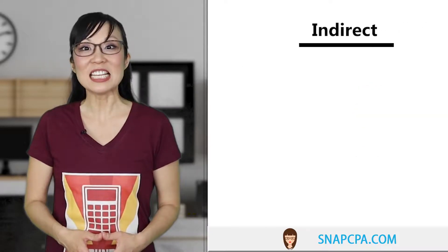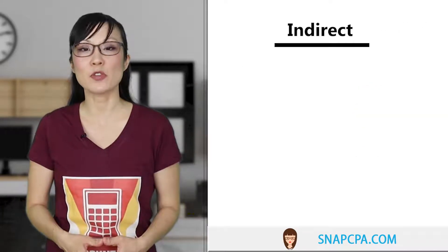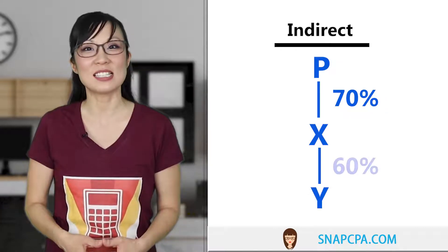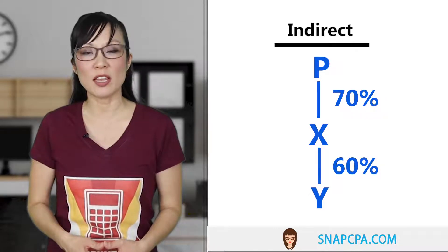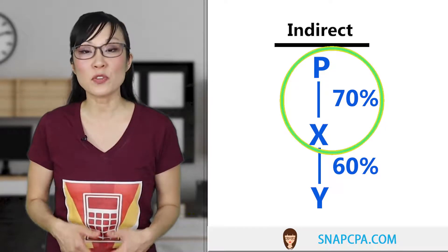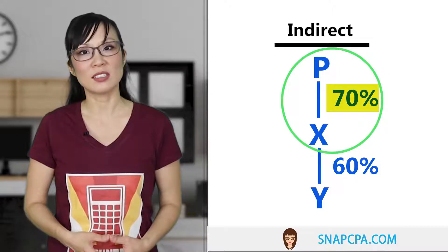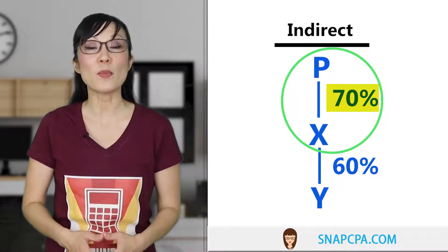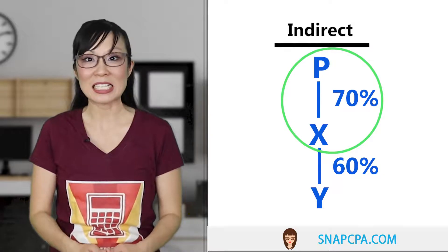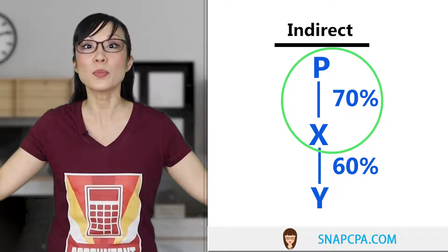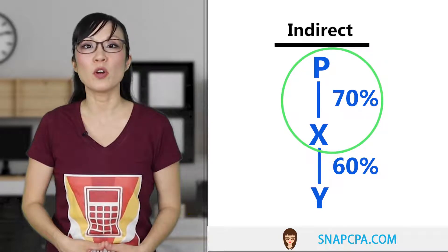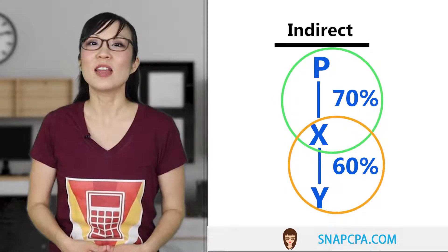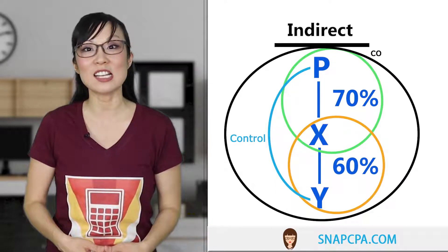Now let's look at indirect ownership. This is when a parent owns more than 50% of a subsidiary through other companies. For example, a parent owns 70% of the voting rights of X, and X in turn owns 60% of the voting rights of Y. Parent directly owns 70% of X, so parent definitely controls X. Because parent controls X — and it doesn't matter whether that's 51%, 70%, or 100% — parent wins the vote 100% of the time. If parent controls X and X controls Y, then parent also controls Y, which means Y also gets consolidated with parent.